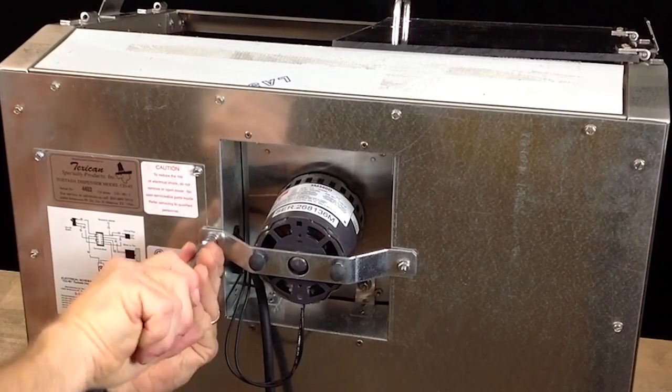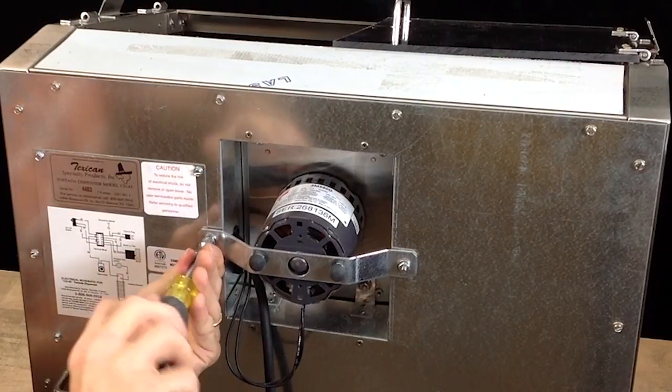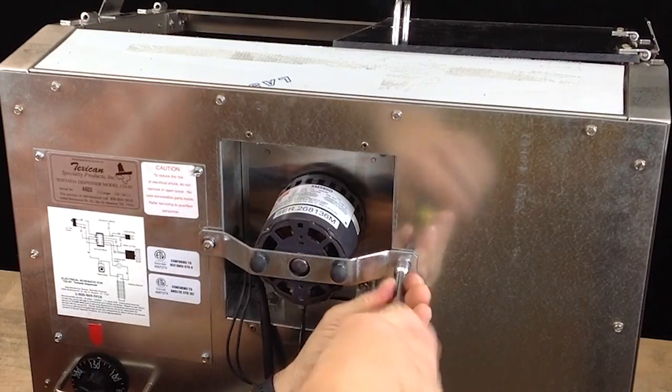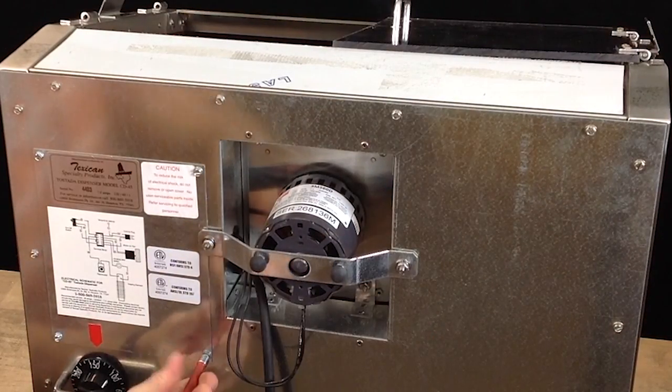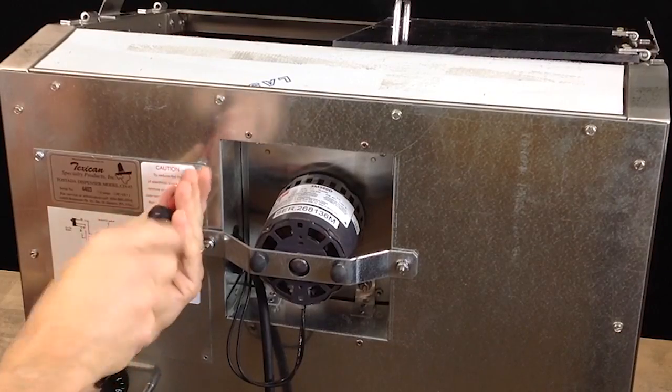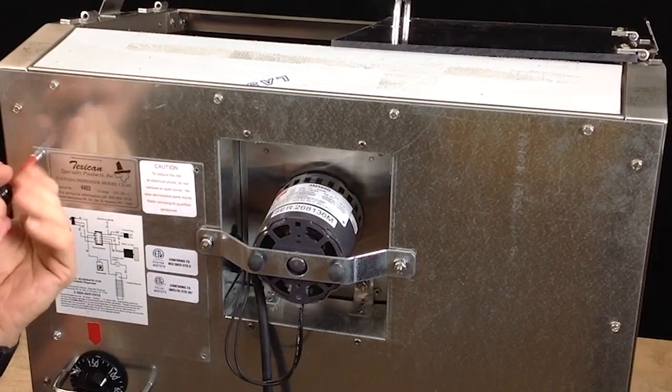Using the 3 1/8 inch nut driver, loosen but do not remove both nuts on the motor bracket. Use the 1/4 inch nut driver to remove the four screws of the electrical panel, then remove the cover.